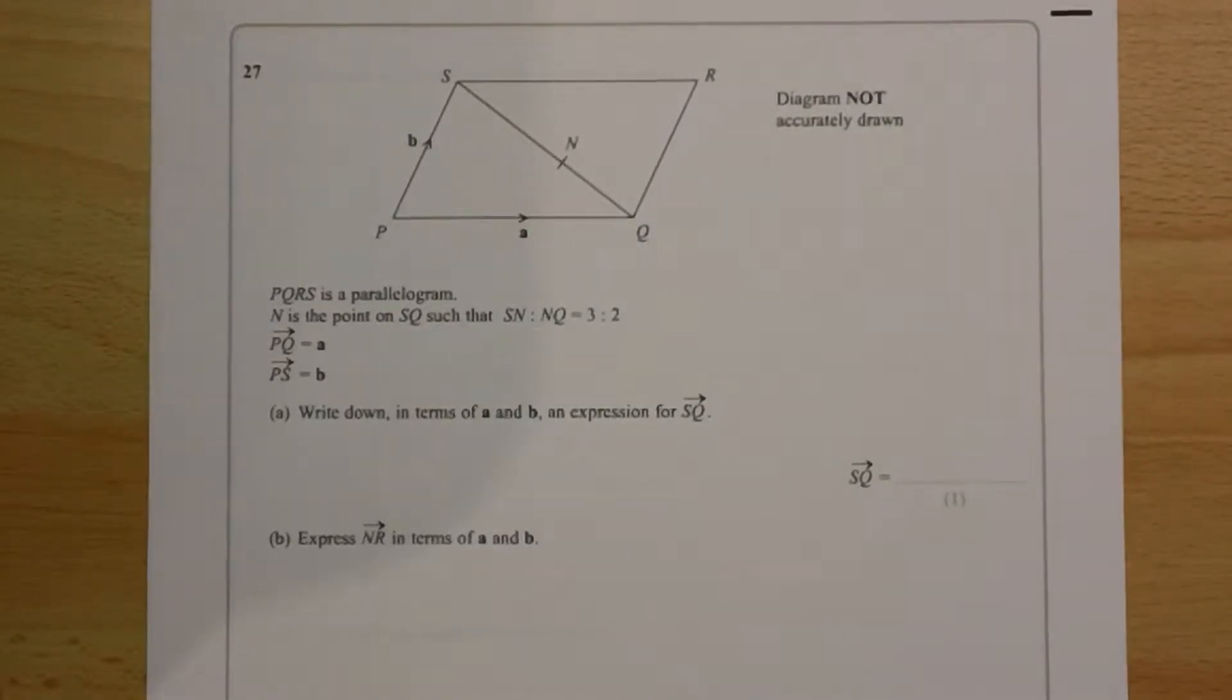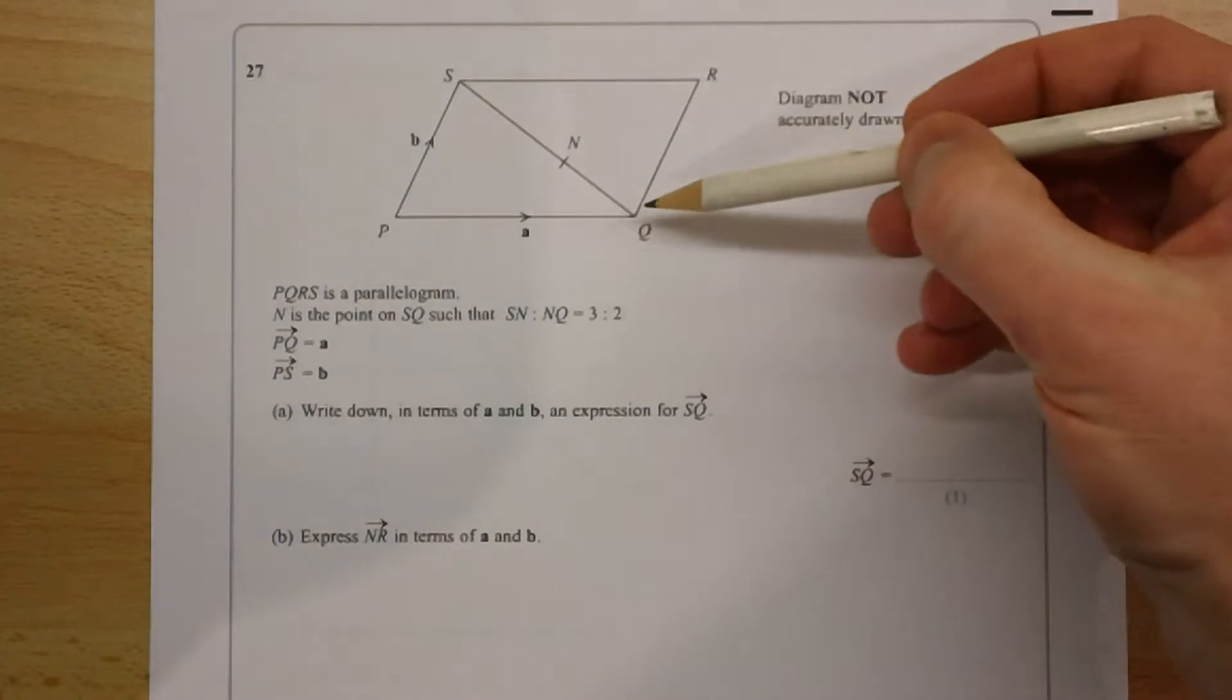Question number 27, vectors. Part A, write down, in terms of A and B, an expression for the vector SQ.